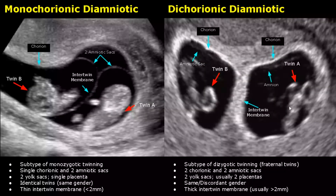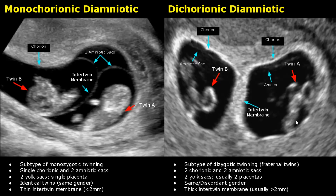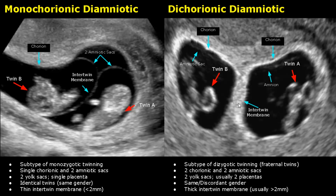In dizygotic twins, two eggs are fertilized by two different sperm, and these twins will be fraternal twins. Dichorionic-diamniotic is its subtype, in which there will be two chorionic and two amniotic sacs. They will have two yolk sacs and usually two placentas as well. The twins' gender can either be the same or discordant — one twin can be female and the other male. The intertwin membrane will be thick because it is made up of two layers of chorion and two layers of amnion, much thicker than in monochorionic-diamniotic twins.